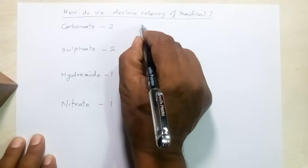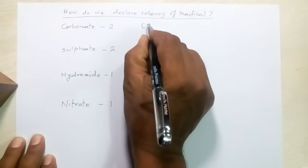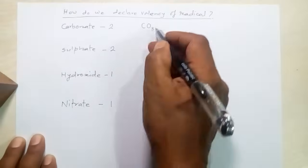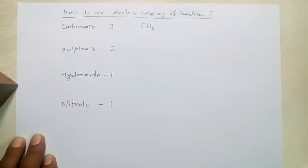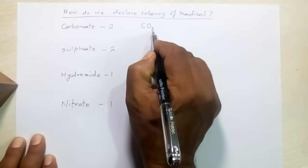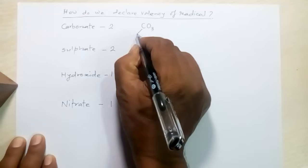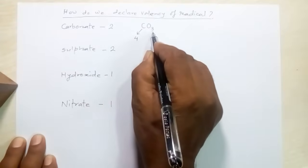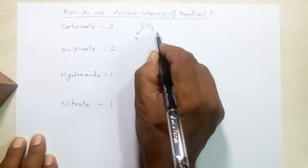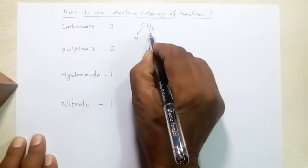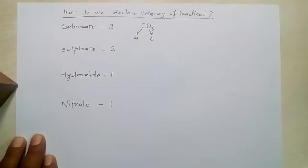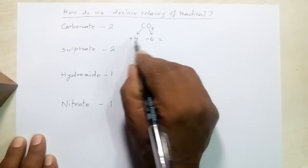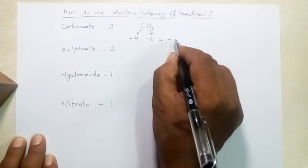Carbonate's formula is CO₃. In this formula, one carbon atom is combined with 3 atoms of oxygen. The valency of carbon is 4 and the valency of oxygen is 2. Since we have 3 oxygen atoms, the total valency from oxygen is 6. Carbon is electropositive and oxygen is electronegative, so the sum is +4 and −6, which gives −2.